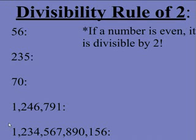The divisibility rule of 2: if a number is even, it is divisible by 2. Therefore, if it is odd, it is not divisible by 2. Let's look at a couple of samples.